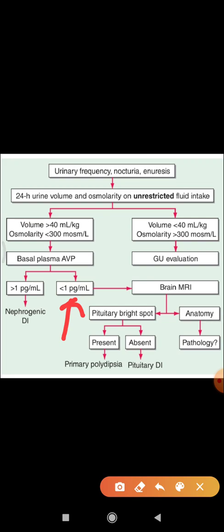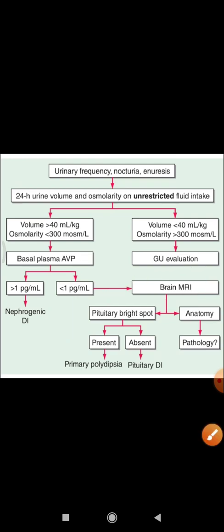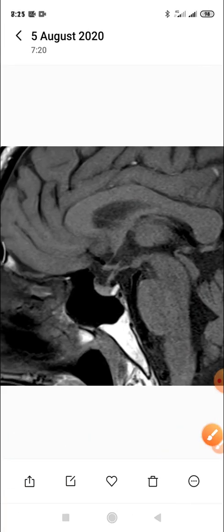To differentiate between primary polydipsia and pituitary diabetes insipidus, an important investigation is brain MRI. On T1-weighted midsagittal MRI, a pituitary bright spot should be evaluated.